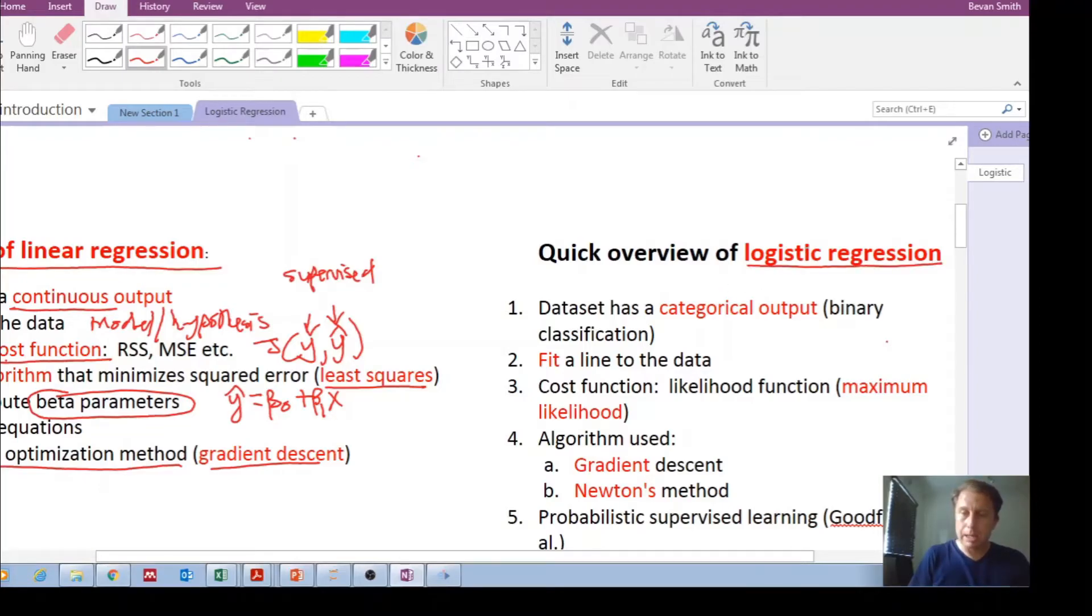Logistic regression is when our output, our dataset, has a categorical output—binary classification, for example: male/female, pass/fail, cancerous/not cancerous, you got the loan/you didn't get the loan.